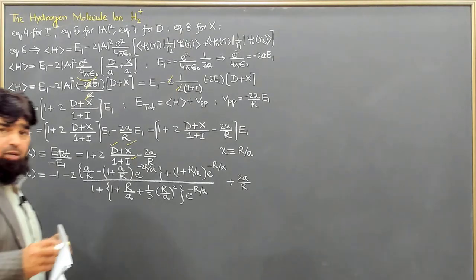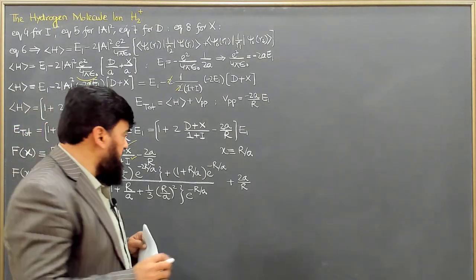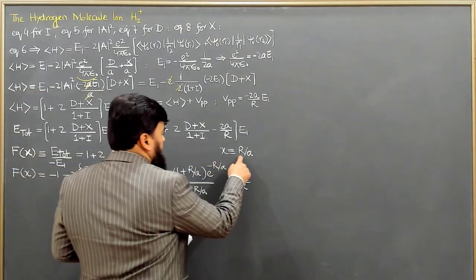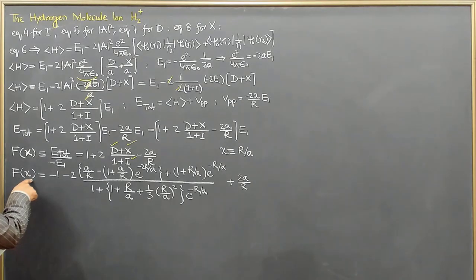Now, in order to give it a proper shape, to simplify this one, we define x equal to—this is what I have supposed f of x here. This x, small x, is basically...